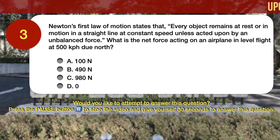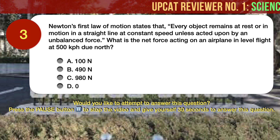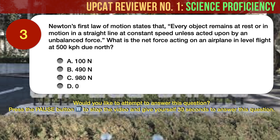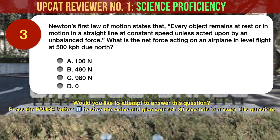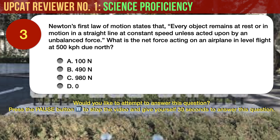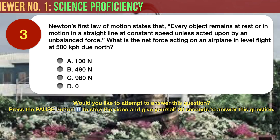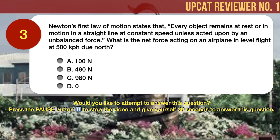Question number 3. Newton's first law of motion states that every object remains at rest or in motion in a straight line at constant speed unless acted upon by an unbalanced force. What is the net force acting on an airplane in level flight at 500 kilometers per hour due north? A. 100 Newtons. B. 490 Newtons. C. 980 Newtons. D. Zero.